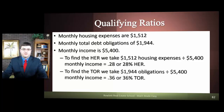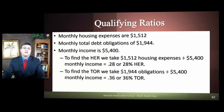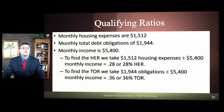For the monthly total obligations, it flat out told us what they were. So we just take that number, $1,944, and divide it by the same income, $5,400. Our Total Obligations Ratio (TOR) is 36% — higher than the 28% housing expense ratio.